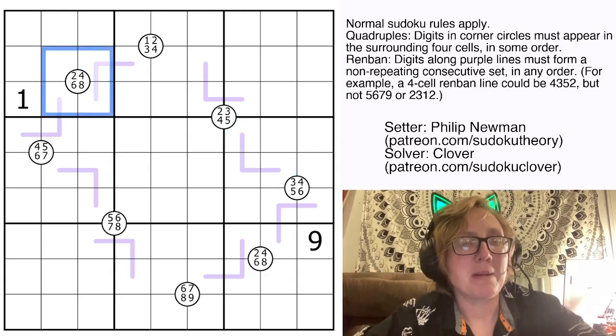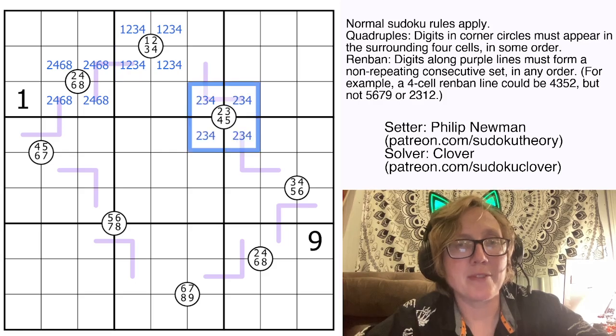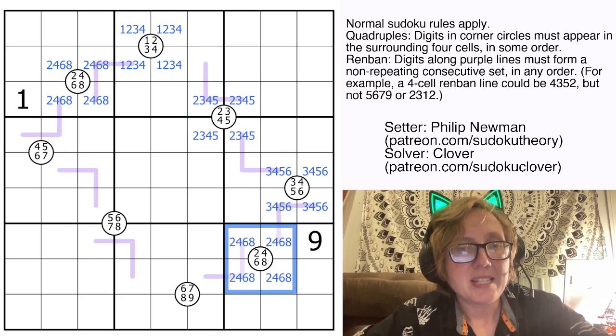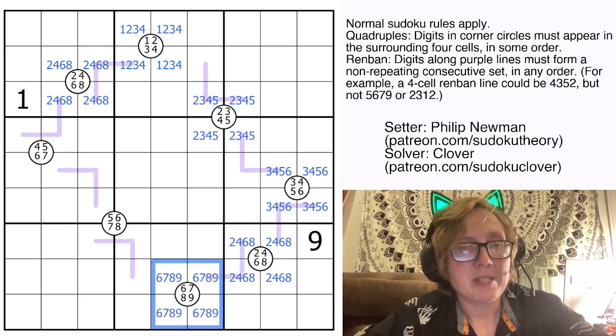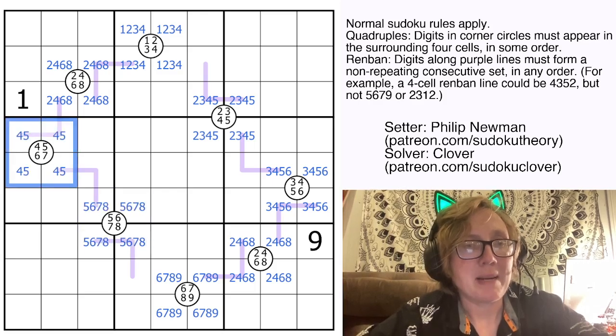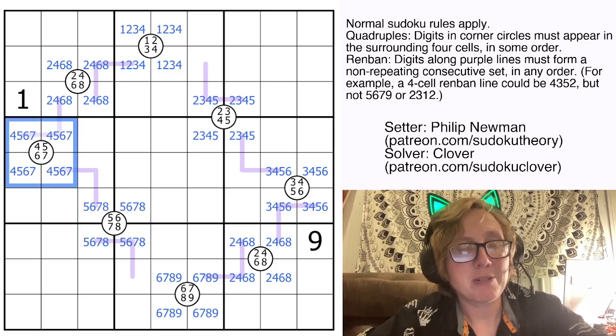So I'm going to start by pencil marking in these digits just so I can see them in the grid and don't have to keep referring back to the quadruples. This is something I do pretty frequently when I'm solving on a computer, just because I find it easier to have my pencil marks in already and to be able to go back and forth and erase them as I eliminate options.